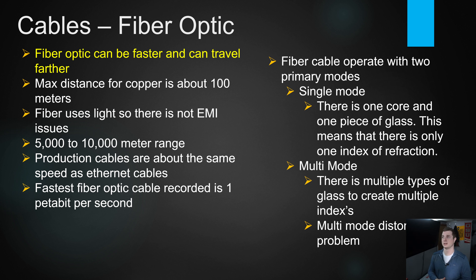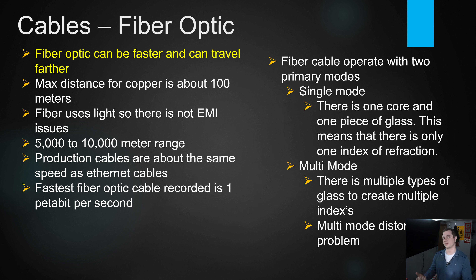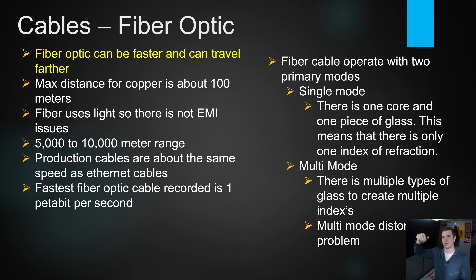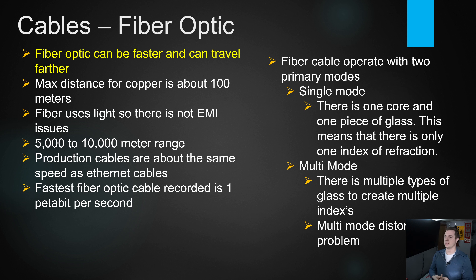Multi-mode fiber optic is the opposite — you can have multiple traffic streams through the cable, handled through different light frequencies. As light bounces through the cable at different angles, each frequency represents different data, and the switch or router determines which packet belongs to which frequency. The challenge is that if the cable itself is distorted, that causes problems.